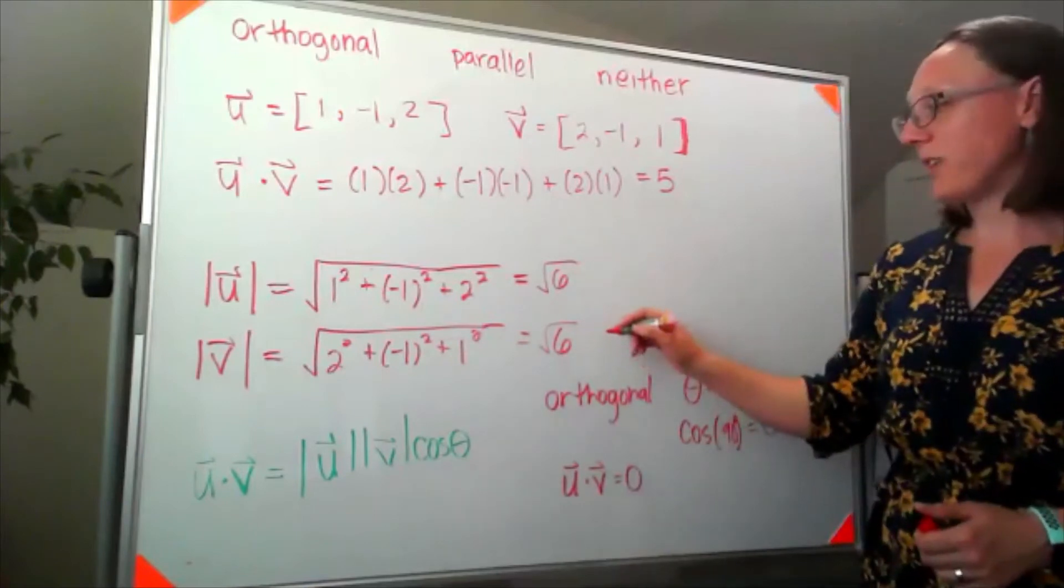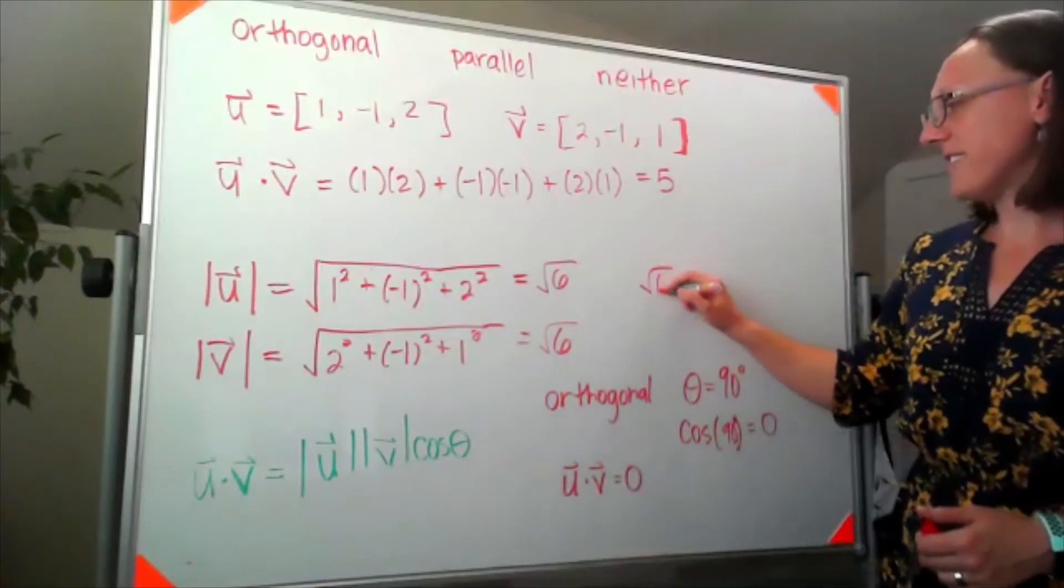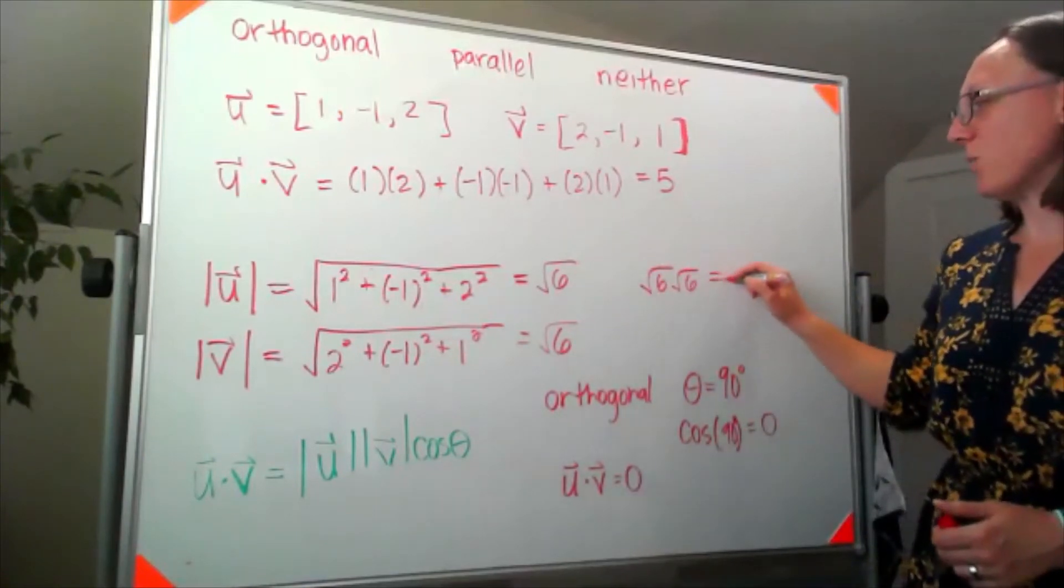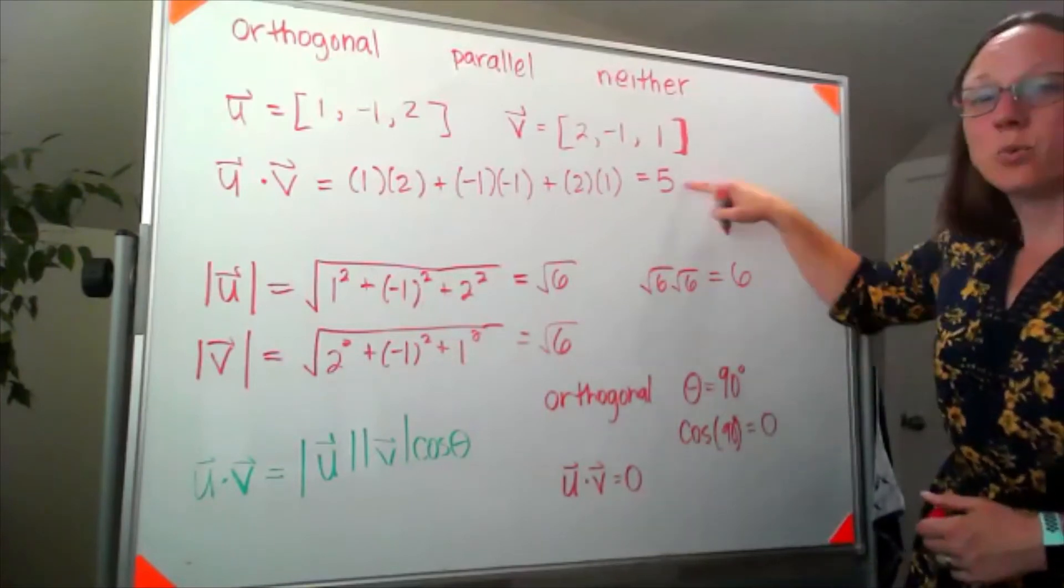If I multiply these two together, square root of 6 times the square root of 6 is equal to 6. These two don't match.